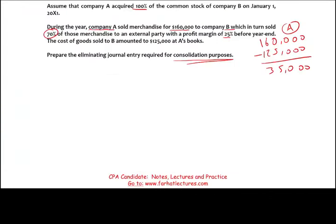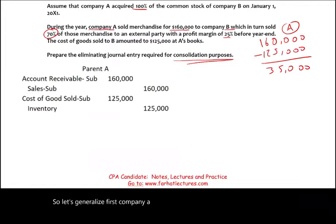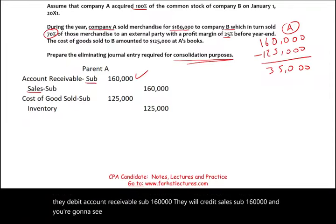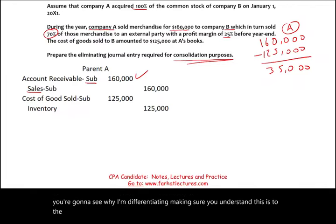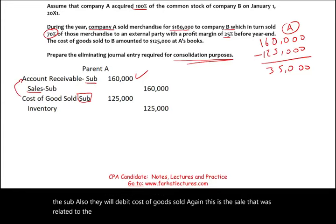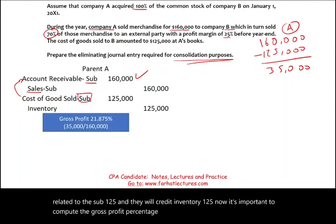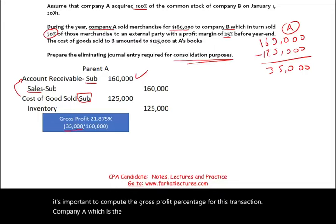Let's journalize Company A's entries first. Company A made a sale to the sub, so they debit Accounts Receivable — Sub for $160,000 and credit Sales — Sub for $160,000. They also debit Cost of Goods Sold — related to the sub — for $125,000 and credit Inventory for $125,000. It's important to compute the gross profit percentage for this transaction: Company A made $35,000 profit on a $160,000 sale.